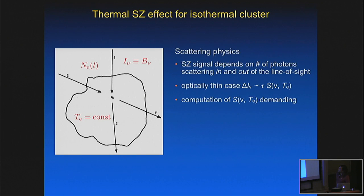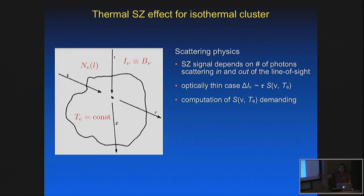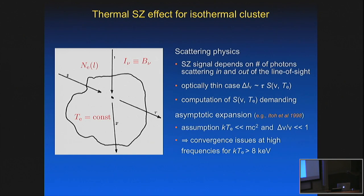For a cluster that is isothermal but has a density profile, the normal SZ effect is given by the optical depth along a line of sight multiplied by a temperature-dependent function and a frequency-dependent function. This function encodes all the scattering physics and must be computed precisely — which is actually demanding. One way to do this is asymptotic expansions, but they have convergence problems at high frequencies because the scattering kernel becomes broader than the exponential shape. With SZPAC, for a single cluster and single temperature including kinematic effects, you can easily calculate the distortion shape — very simple, very fast, and works up to extremely high temperatures such as 75 keV.